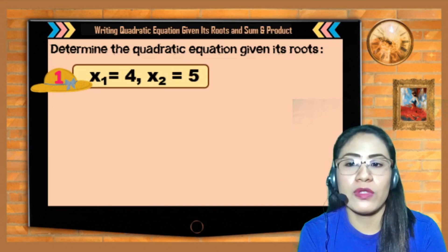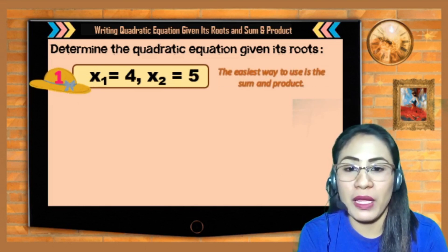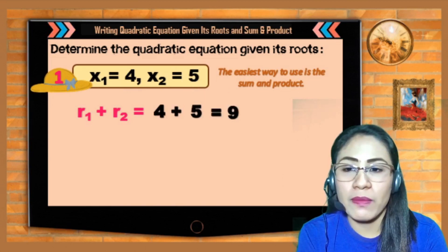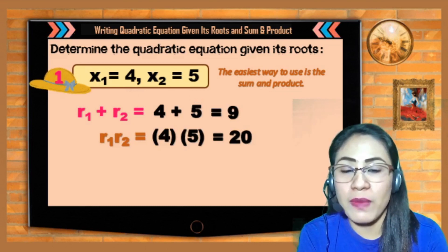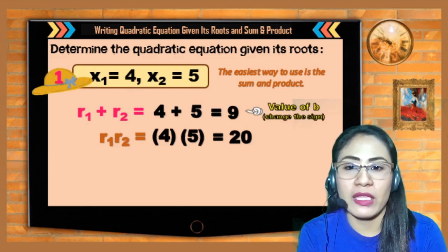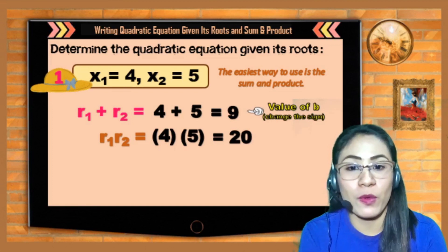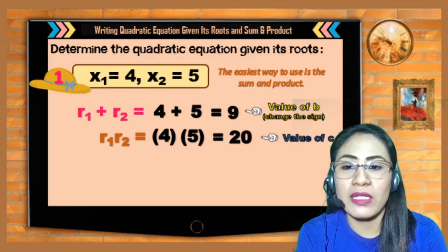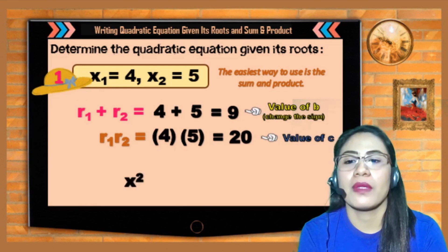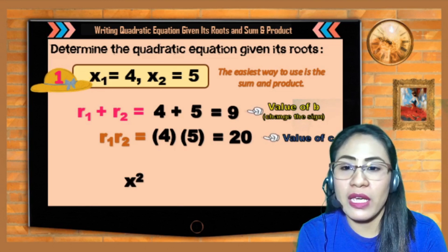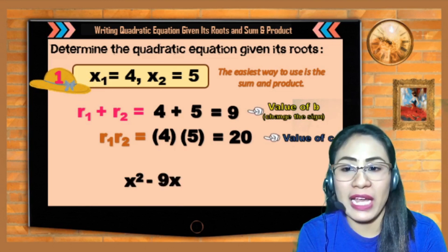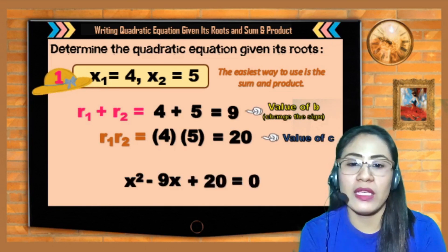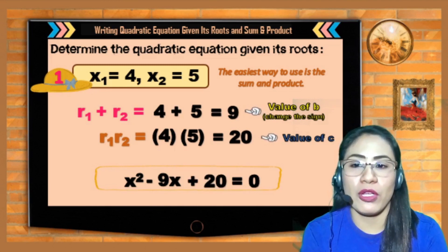Another example with roots 4 and 5. Sum = 4 + 5 = 9; product = 4 × 5 = 20. The value of b is the sum with sign changed; the value of c is the product. The equation becomes x² − 9x + 20 = 0.